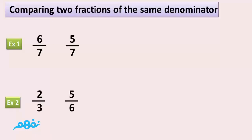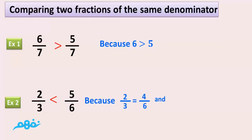Example 1: 6 over 7 is greater than 5 over 7 because 6 is greater than 5. Example 2: 2 over 3 is less than 5 over 6 because 2 over 3 equals 4 over 6, and 4 over 6 is less than 5 over 6.